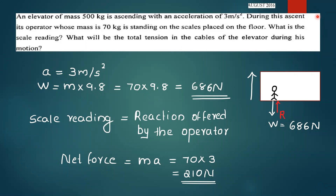What will be the total tension in the cables of the elevator during this motion? The elevator of mass 500 kg is ascending with an acceleration of 3 m per second squared.